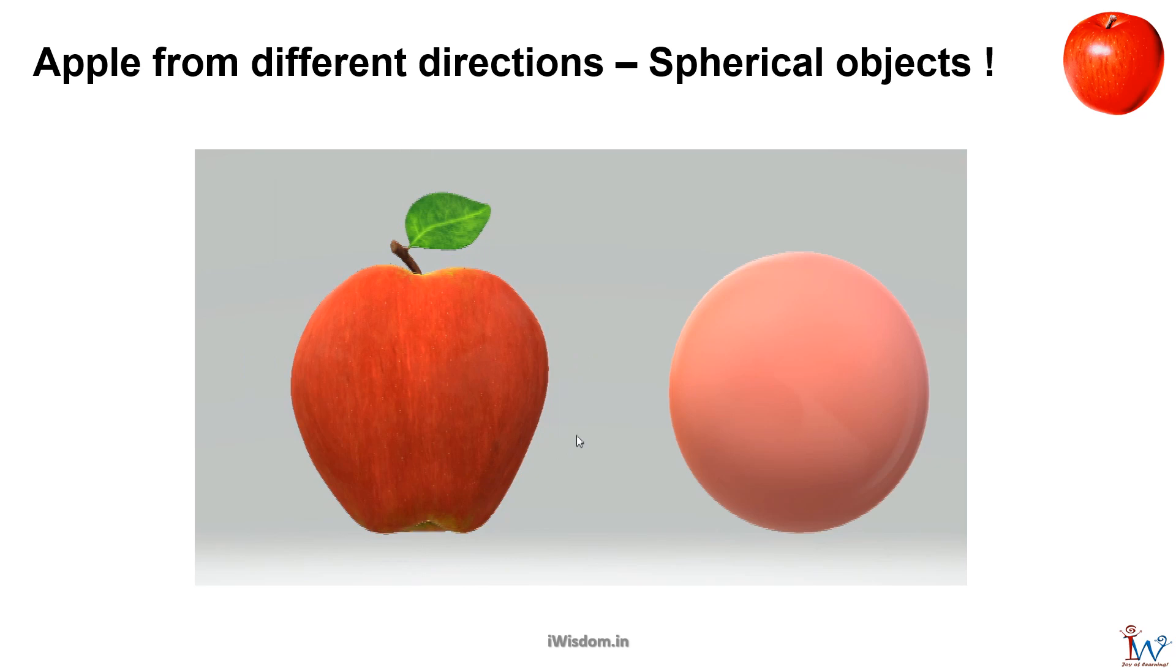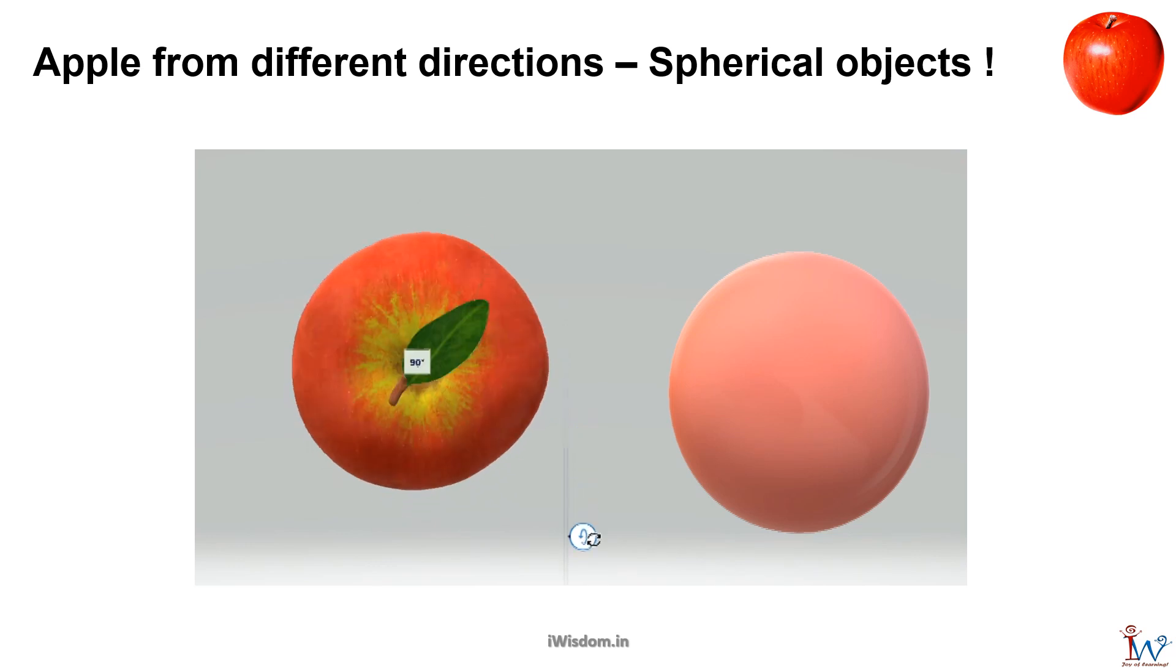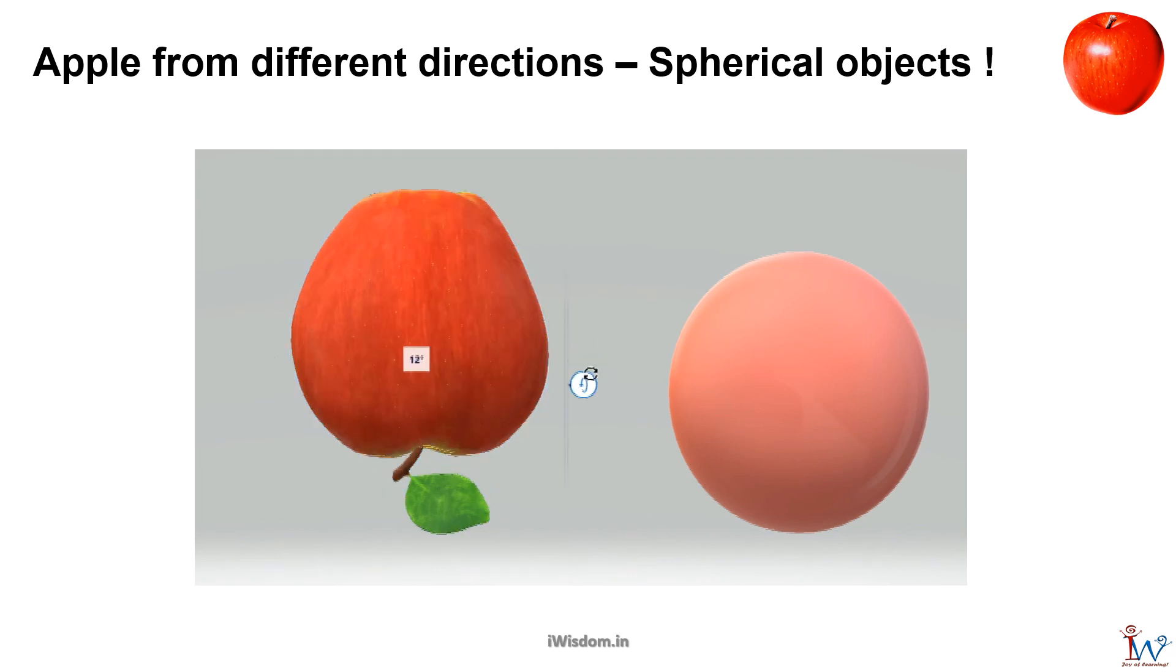Round objects are called spherical as they look circular whether you look at them from the top, or from the bottom, or from sideways. They can roll in any direction with ease. Apple is almost circular from all directions, while football is a perfect sphere.